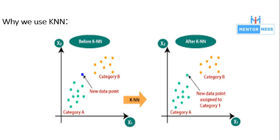Why we use KNN? In these two graphs, we have shown before KNN and after KNN. Suppose we have category A and category B, and we have a new data point. Now, in which of these categories will the data point lie? To solve this type of problem, we need a KNN algorithm. With the help of KNN, we can easily identify the category or class of a particular dataset.